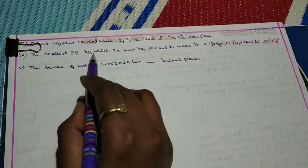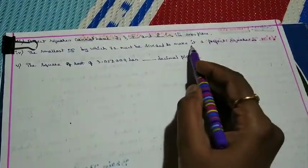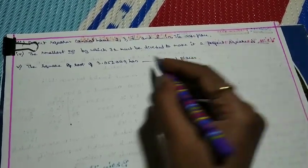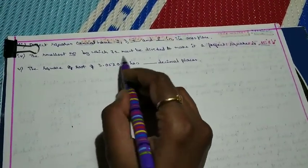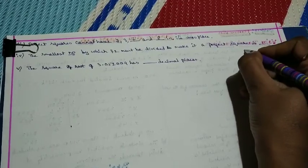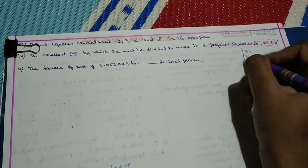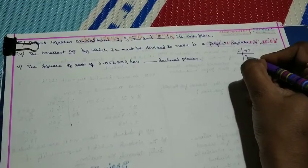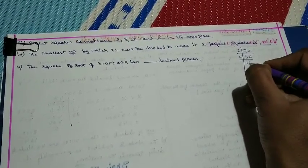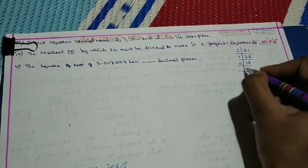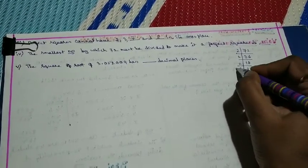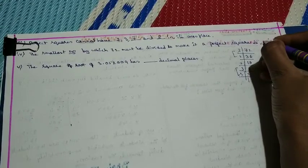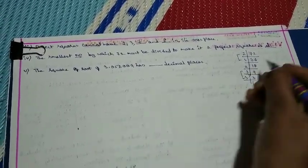Question 4: The smallest number by which 72 must be divided to make it a perfect square. Using prime factorization: 72 = 2 × 2 × 2 × 3 × 3. The pair of 3s and one pair of 2s are complete, but one 2 is unpaired. Therefore, 72 must be divided by 2 to make it a perfect square.